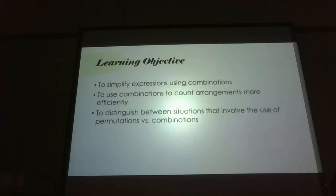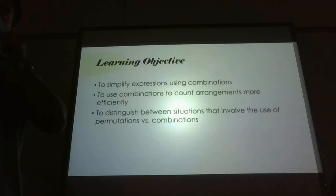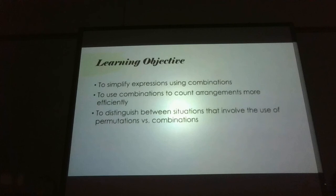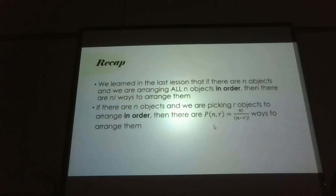So for combinations, don't worry about writing this down — I'm just going to go over what we're covering today. We'll talk about how to simplify expressions that have combinations, then how to use this to count. Essentially, with permutations and combinations, you're learning how to count faster — instead of doing a tree diagram or listing options, which only works if you have a small number of things. We'll also briefly discuss how to know whether to use permutations or combinations.